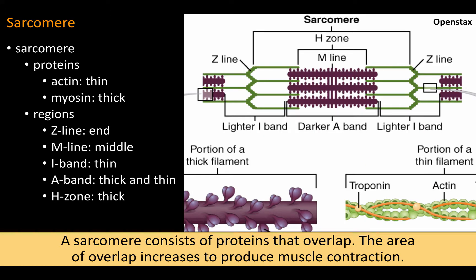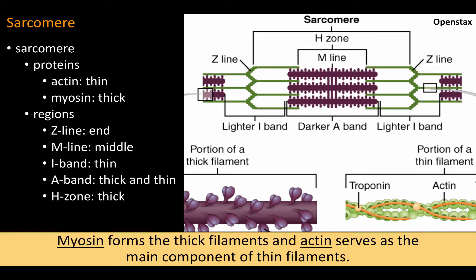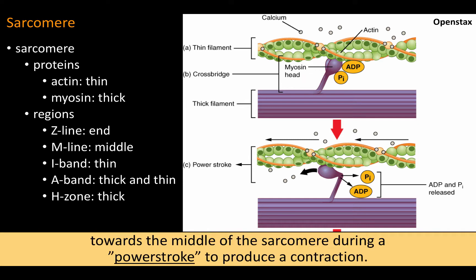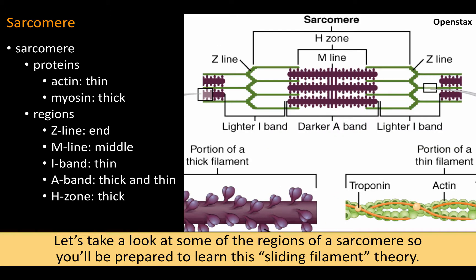A sarcomere consists of proteins that overlap. The area of overlap increases to produce muscle contraction. Myosin forms the thick filaments and actin serves as the main component of thin filaments. In physiology, you'll learn how a myosin head binds to a site on the actin filament and moves it towards the middle of the sarcomere during a power stroke to produce a contraction. Let's take a look at some of the regions of a sarcomere so you'll be prepared to learn this sliding filament theory.